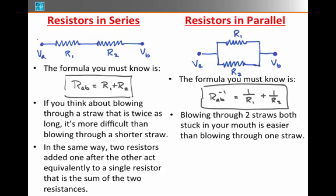If you think about it, blowing through two straws stuck in your mouth side by side is easier than blowing through one straw because you're blowing through two diameters at once. And so actually this equivalent resistor here will always be smaller than any one of these two resistors by itself.